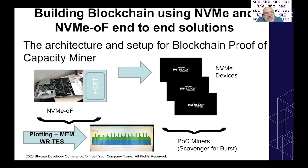The architecture and setup for a blockchain proof of capacity miner is covered as an example. They use Western Digital NVMe devices with NVMe over Fabrics, and show some results as well.